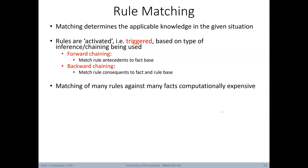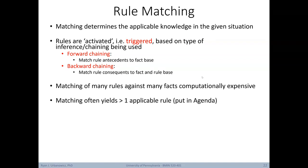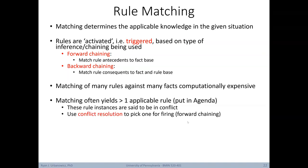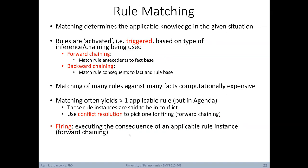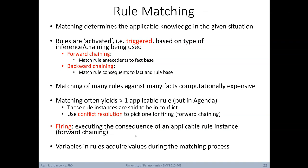Matching can be the most computationally expensive step. It often yields more than one applicable rule, which gets placed on an agenda to be processed in sequence. When multiple rules are applicable, they are said to be in conflict, and conflict resolution is needed to pick one to fire. Firing describes the execution of the consequence of an applicable rule instance — if the antecedents are satisfied, the consequent is added as a new fact. Variables in rules acquire values during matching, like instantiation in logic.